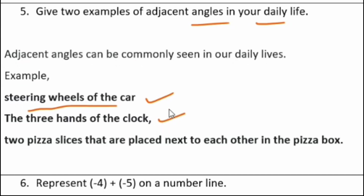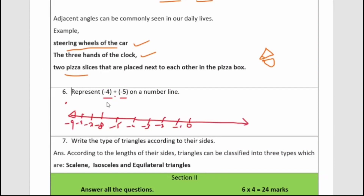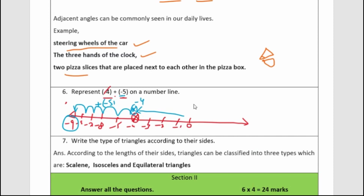The three hands of a clock will also have adjacent angles. This represents minus 4 plus minus 5 on a number line. Minus 4 lies to the left side of 0. We add minus 5, which is a negative number, so we move 5 more steps left. Minus 4 plus minus 5 is nothing but minus 9.